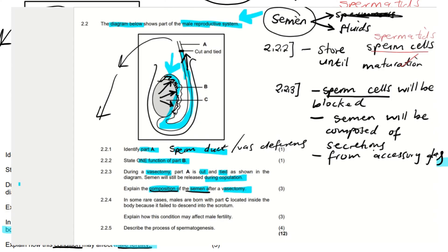Semen normally contains sperm cells from the testes and secretions from the glands — the prostate gland, the Cowper's gland, and the seminal vesicle. Because we have cut this part, sperm cells will be blocked. The semen will now be composed only of secretions from the accessory glands. Sperm cells will not be present — semen without sperm will be released.